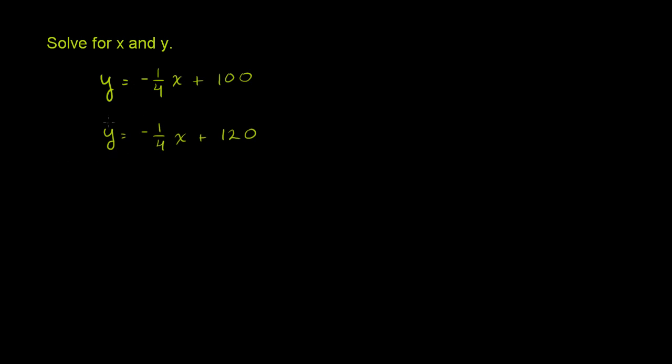We're given a system of equations here, and we're told to solve for x and y. Now the easiest thing to do here, since in both equations they're explicitly solved for y, is to say, well, if y is equal to that, and y also has to equal this second equation, then why don't we just set them equal to each other?